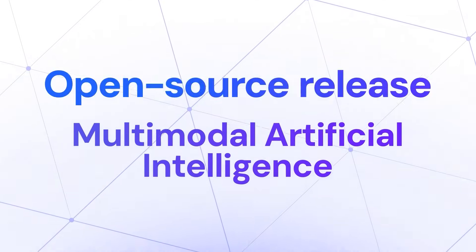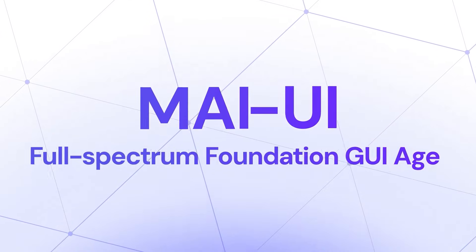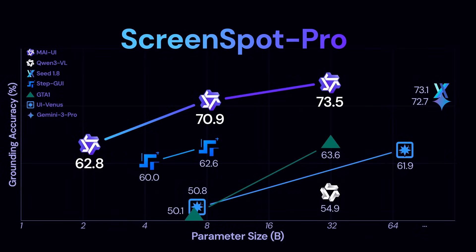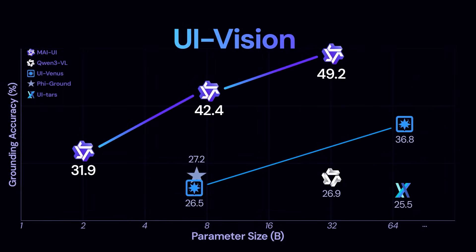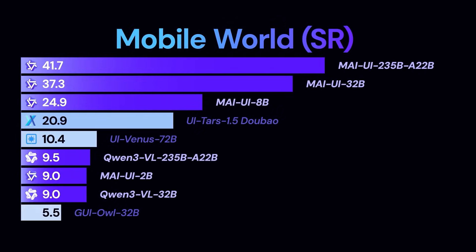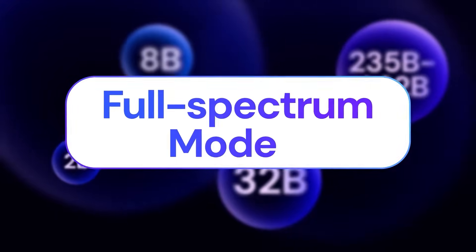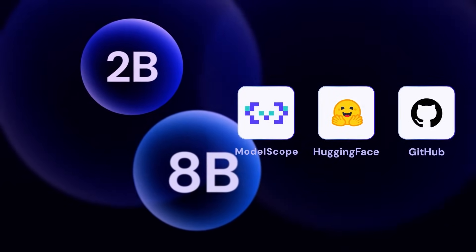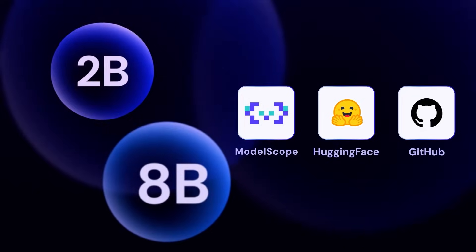Tony Lamp officially open-sources MyUI, a family of foundation GUI agents. It establishes new state-of-the-art performance across general GUI grounding and mobile GUI navigation benchmarks, surpassing both leading closed-source and open-source models. Spanning the full spectrum from efficient 2B to large-scale 72B models, they now open-source the 2B and 8B variants, bringing capable GUI capabilities directly to your pocket.